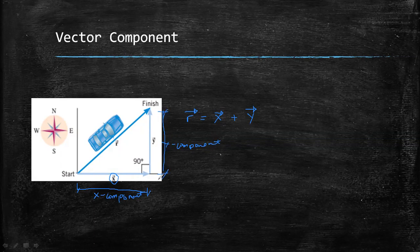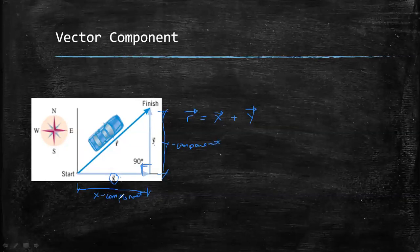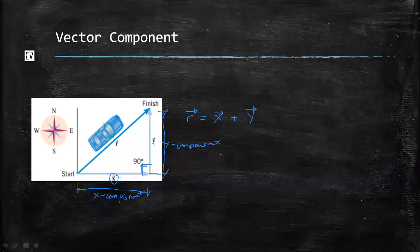Another feature of vector components is that the x and y components are perpendicular vectors, which means that trigonometric functions are applicable in analyzing vectors. Any type of vector may be expressed in terms of its components, and they add vectorially to equal the original vector. Let's have an example.